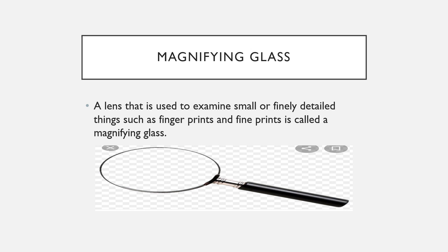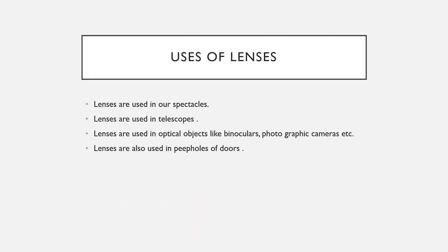Lenses are used in spectacles for people who have vision problems — some cannot see far objects clearly, others cannot see near objects. Different lenses are used for each case. Lenses are also used in telescopes to see stars and planets, and in optical instruments like binoculars and photographic cameras.